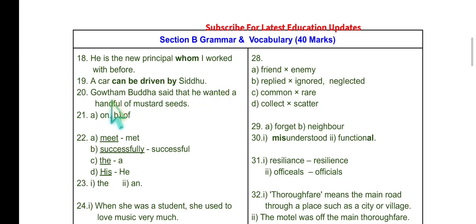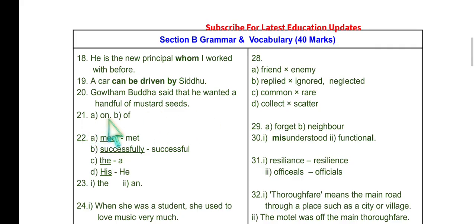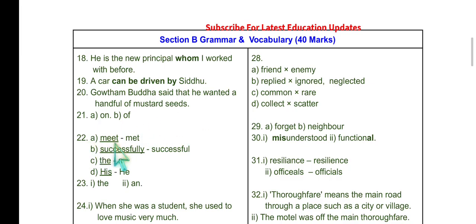Question 20: Change the following into reported speech — 'Gautam Buddha told/said that he wanted a handful of mustard seeds.' Question 21: 'The aeroplane had no lights on its wings' — note 'consists of' is a compulsory preposition; the verb 'consists' takes 'of.' Question 22 editing: 'meet' → 'met,' 'successfully' → 'successful,' article 'a,' and 'his' → 'he.'